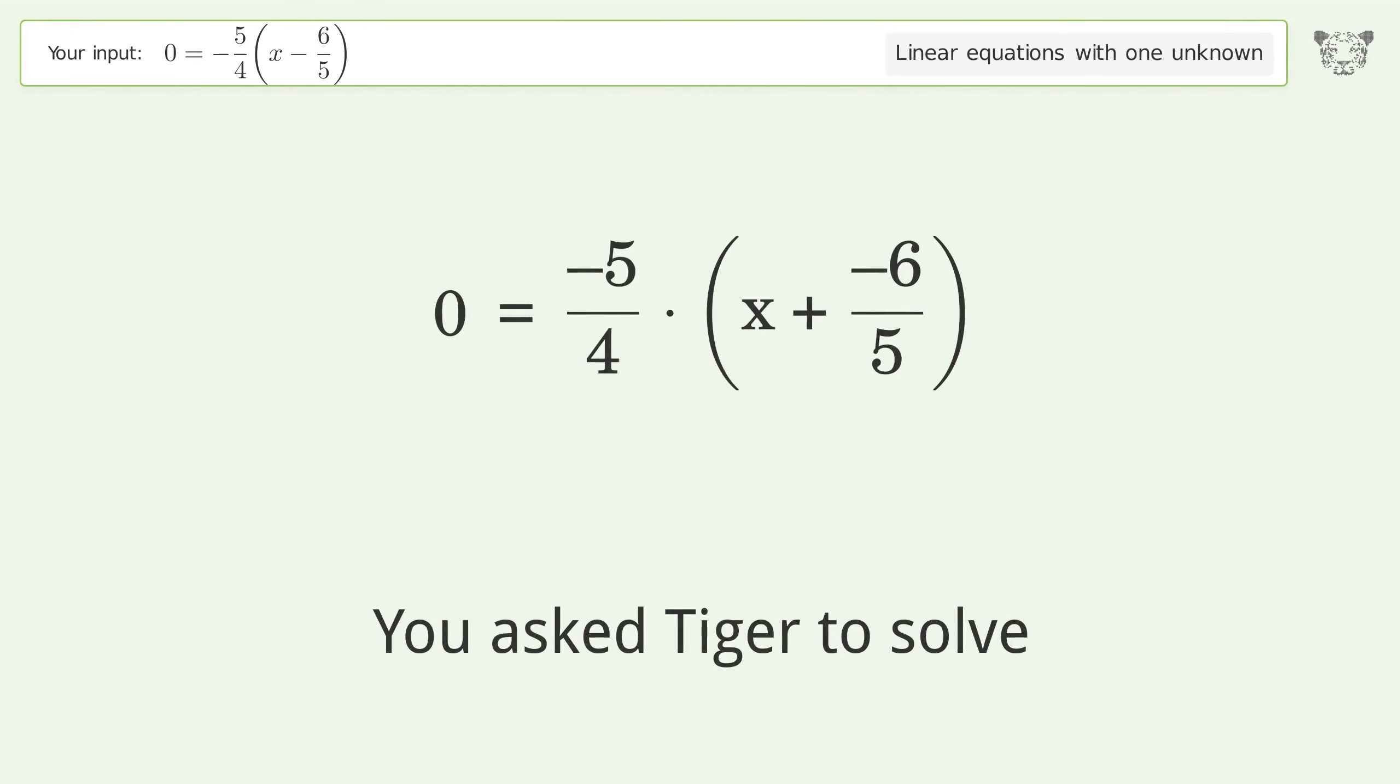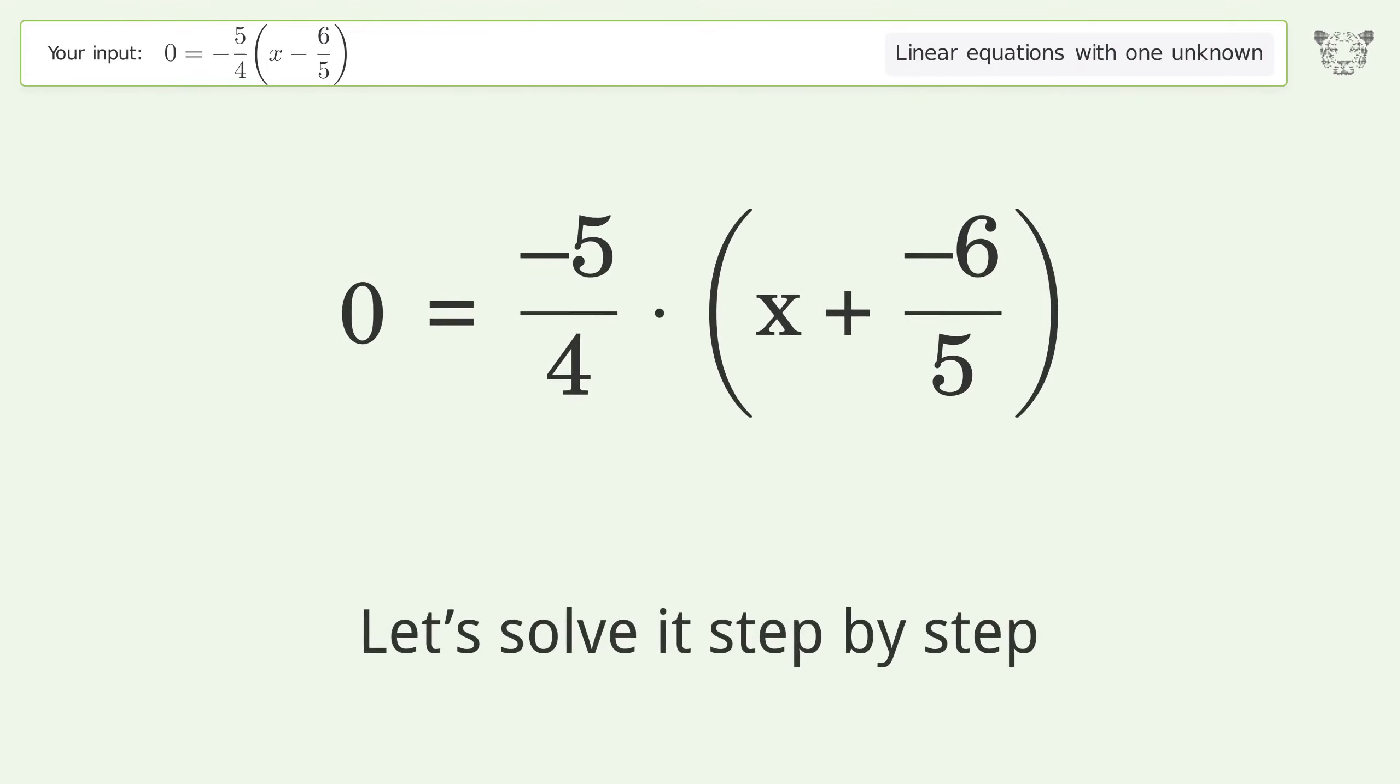You asked Tiger to solve this, which deals with linear equations with one unknown. The final result is x equals 6 over 5. Let's solve it step by step. Simplify the expression, multiply the fractions.